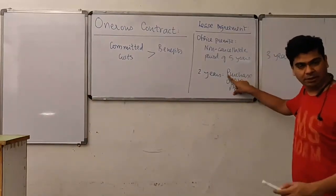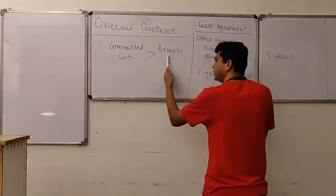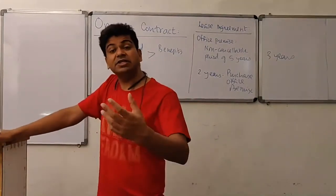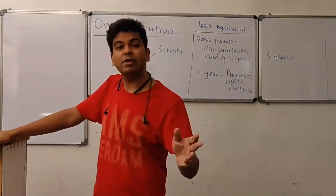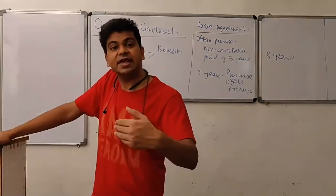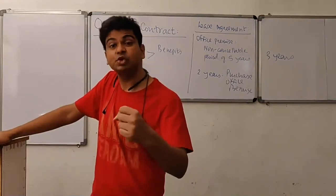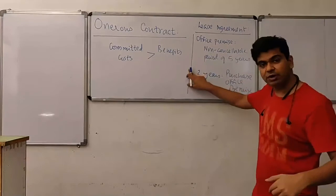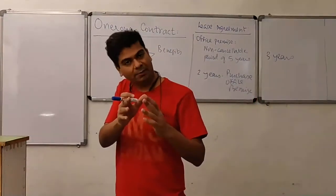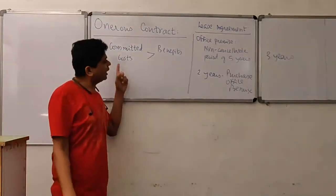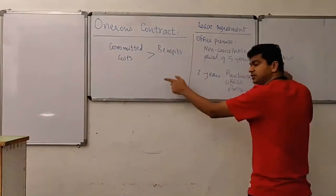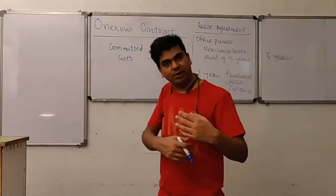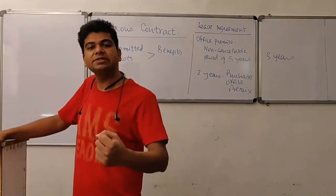You are not occupying the property, which means you are not enjoying any benefit from it. In spite of not enjoying the benefit, there is a committed cost of lease rent for the remaining 3 years. You even ask the lessor whether you can sublease it, but the lease agreement clearly prohibits subleasing. You have a committed cost of paying lease rent for the next 3 years without enjoying any benefit, which is why this contract has become an onerous contract.